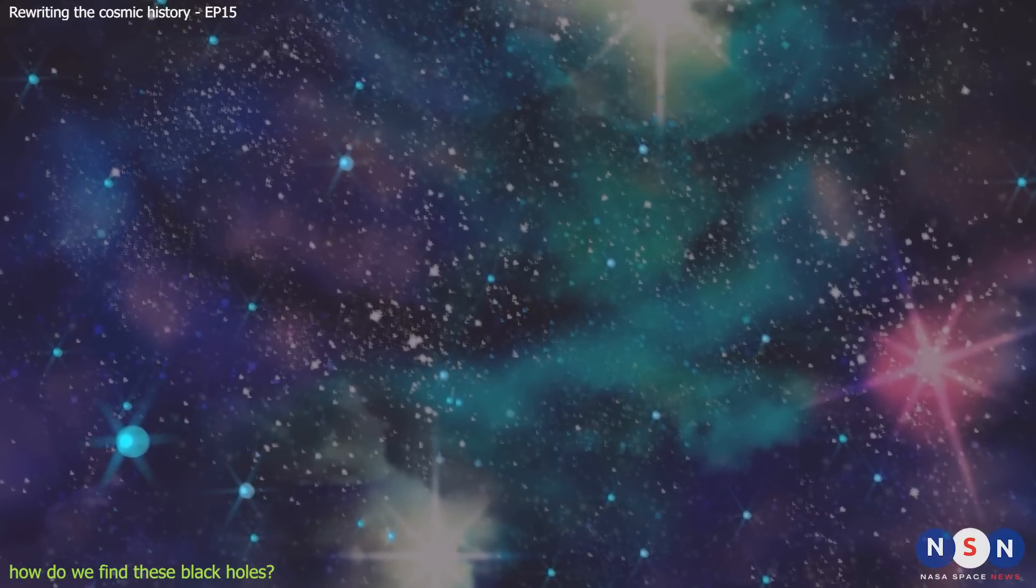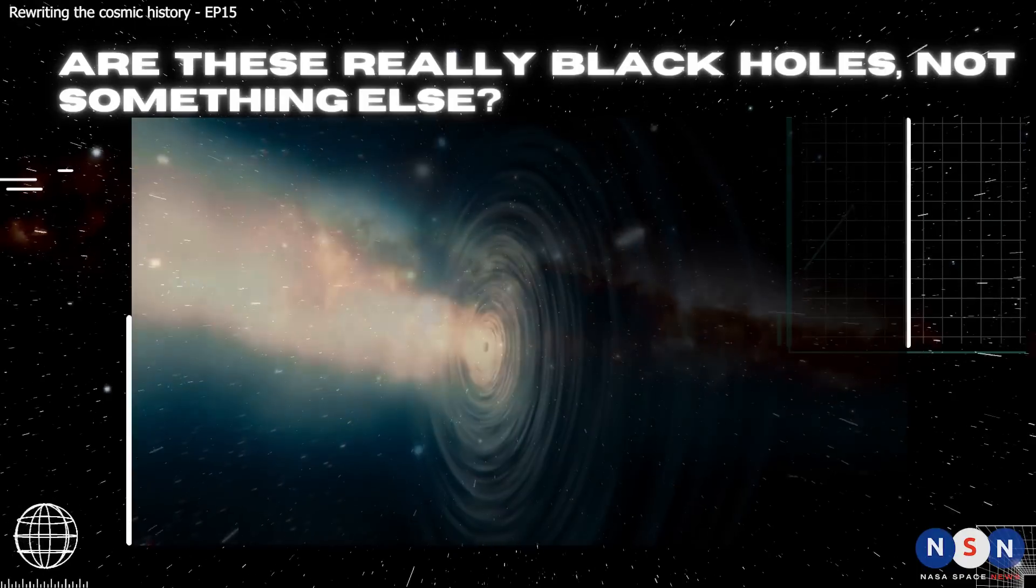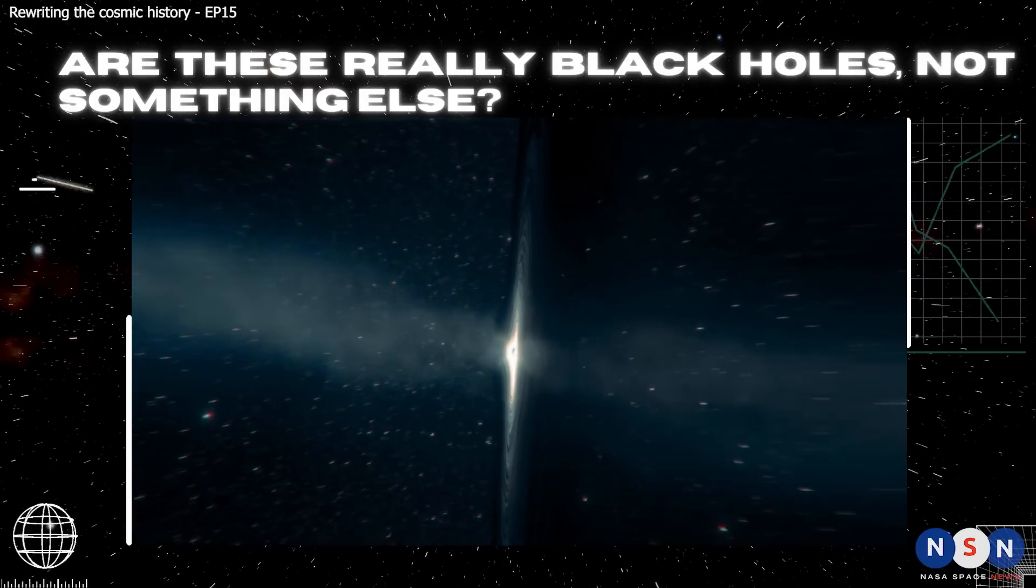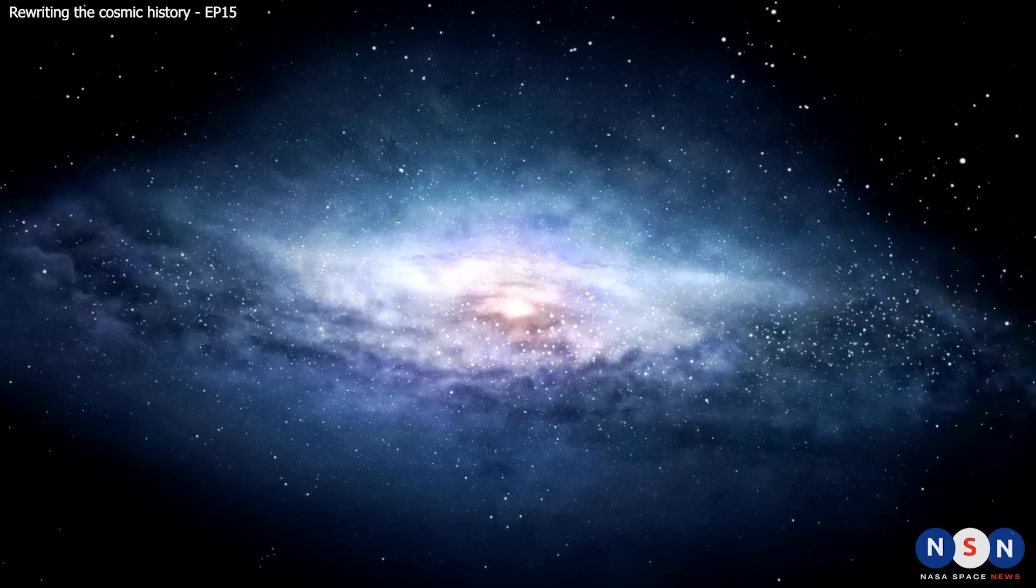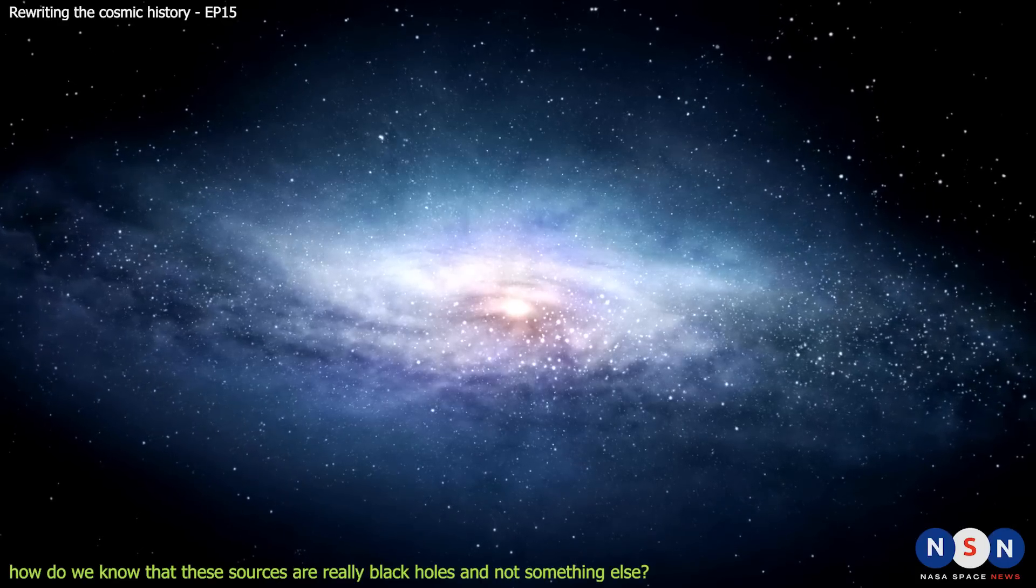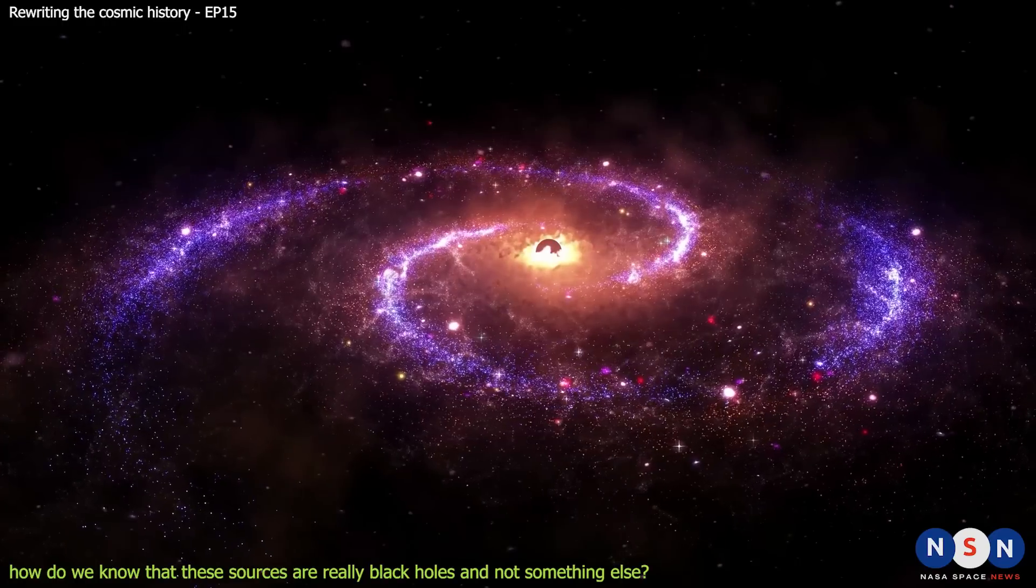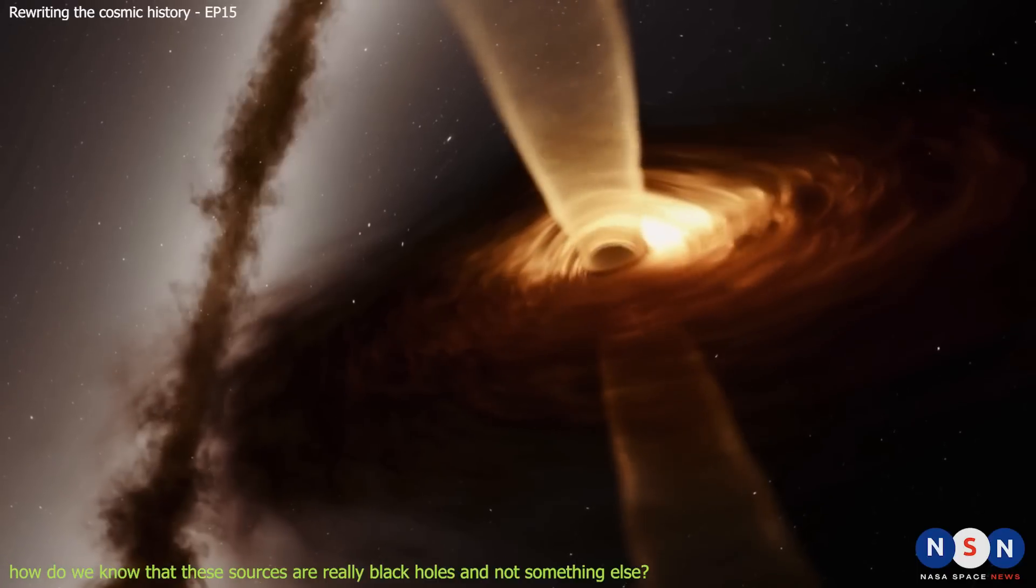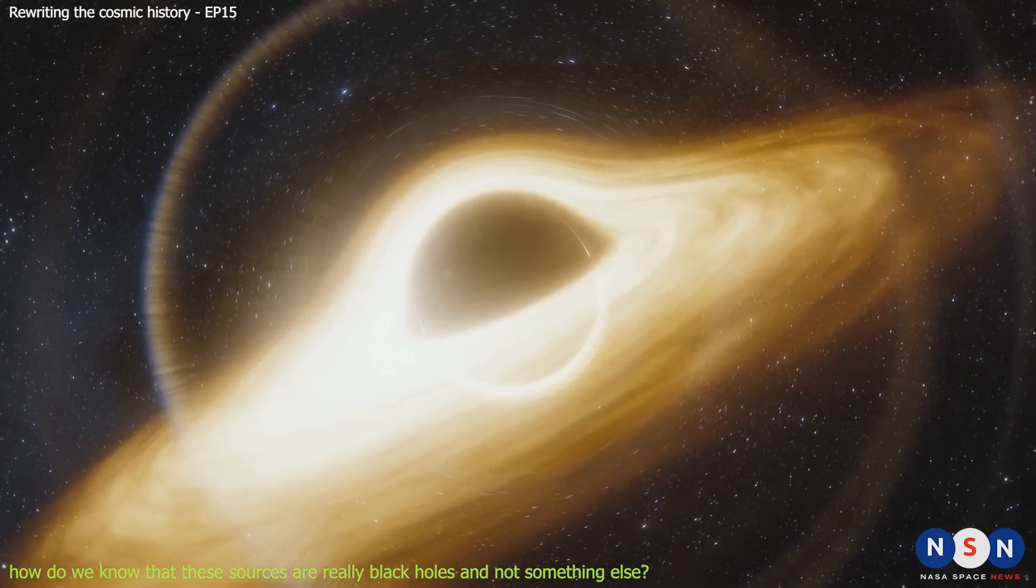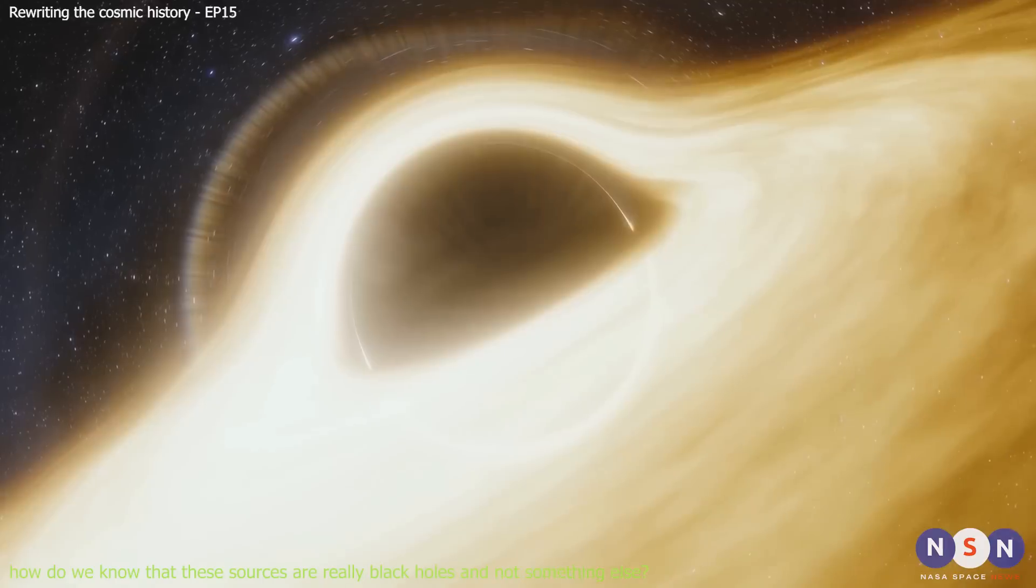By using these techniques and others, we can find and study these black holes and learn more about their nature and origin. But how do we know that these sources are really black holes and not something else? How do we confirm their identity? Well, one way to do that is to compare their properties with those predicted by our theories and models of black hole formation and evolution. For example, we can compare their masses, luminosities, temperatures, spins, accretion rates, environments, with those expected from different scenarios of black hole growth and feedback. We can also look for any signs of variability or periodicity in their light curves, which could indicate fluctuations in their accretion disks or jets.